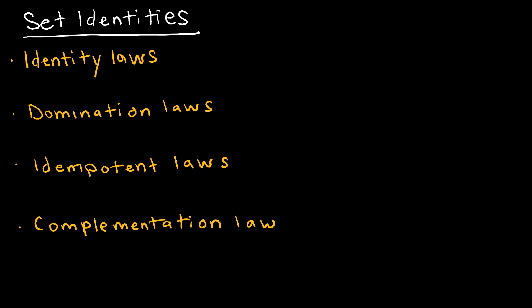We have several set identities that we need to know, and these words should look familiar because we talked about these in predicate logic. We have identity laws, kind of like the additive identity or multiplicative identity. If I take set A and take the union of that with the empty set, my result is set A — essentially saying something plus zero is whatever you started with, which is the additive identity.